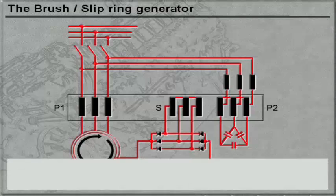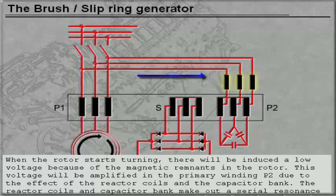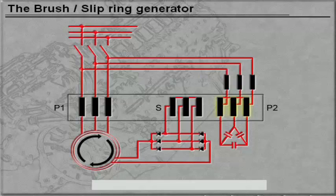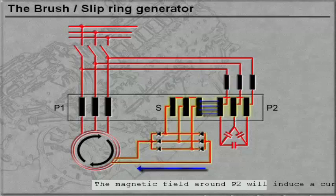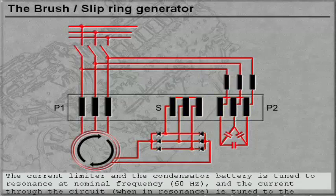When the rotor starts turning, low voltage will be induced because of the magnetic remnants in the rotor. This small voltage passes the current limiter and the primary winding P2. The magnetic field around P2 will induce a current in S. The current limiter and the capacitor battery is tuned to resonance at nominal frequency, and the current through the circuit in resonance is tuned to the nominal terminal voltage.